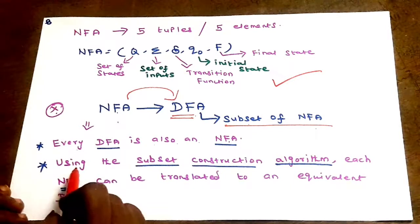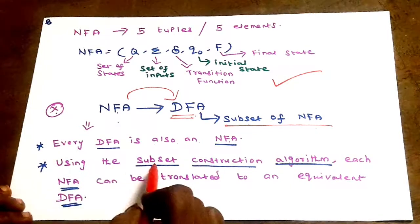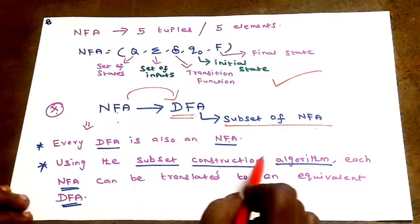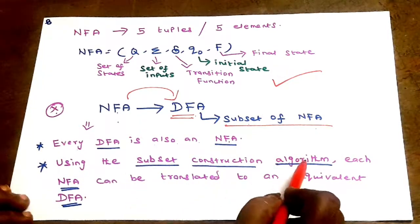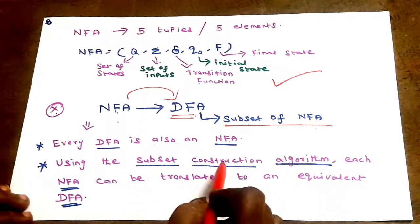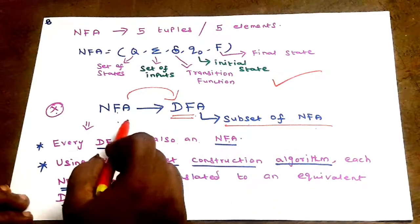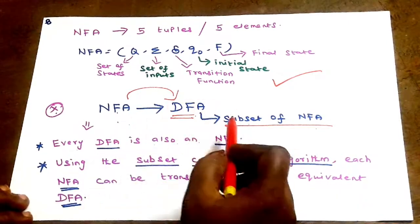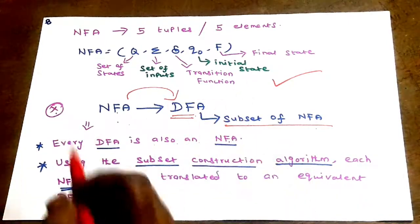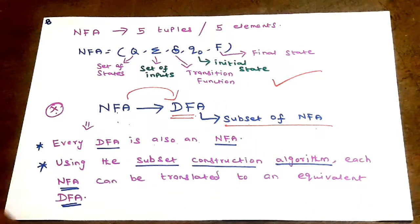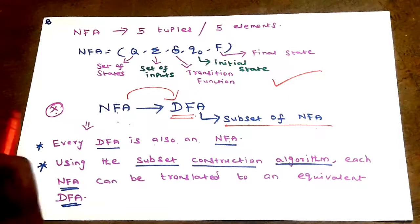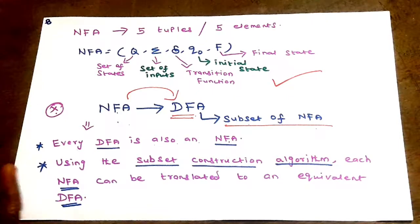Using the subset construction algorithm, an NFA can be translated into its equivalent DFA.